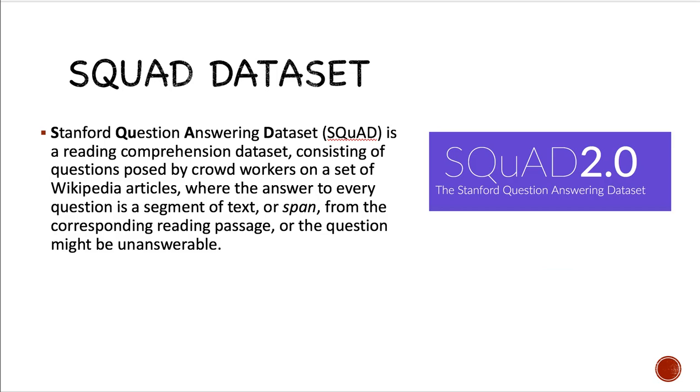The second one is the Squad Dataset, which refers to the Stanford Question Answering Dataset. It is a reading comprehension dataset consisting of questions proposed by crowd workers on a set of Wikipedia articles, where the answer to every question is a segment of text or span from the corresponding reading passage, or the question might be unanswerable.